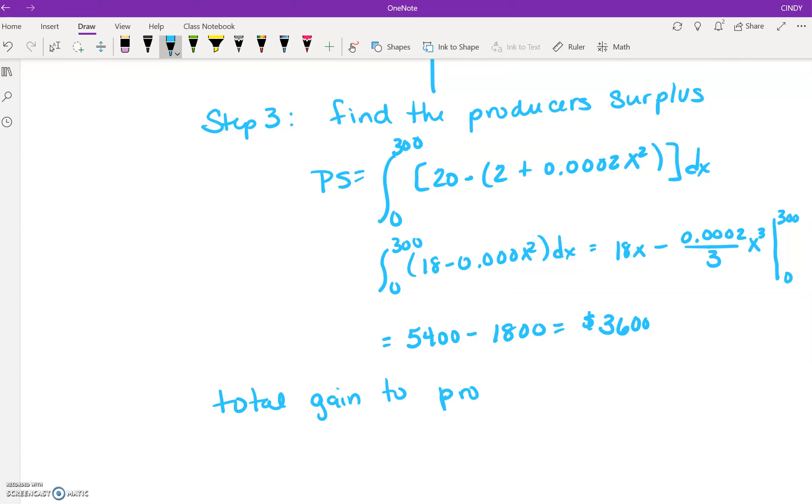So basically that says that the total gain to producers who are willing to supply units at a lower price is $3,600.